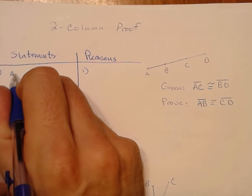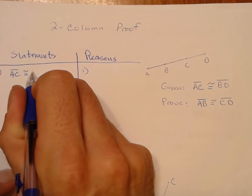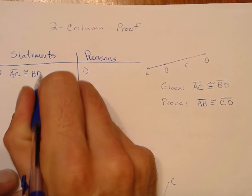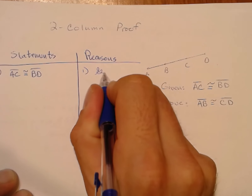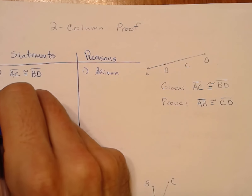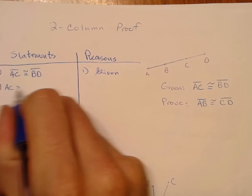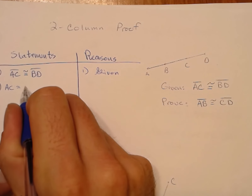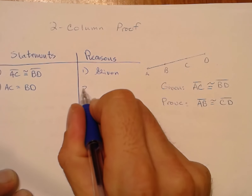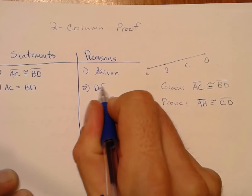We'll start off with our given information. Segment AC is congruent to segment BD — that is given. That means the length of segment AC is congruent to the length of segment BD by definition of congruence.